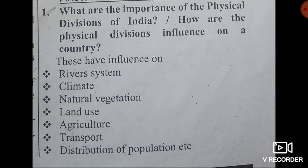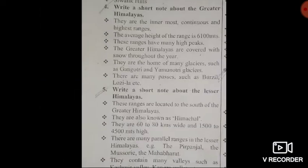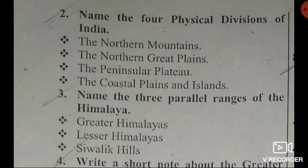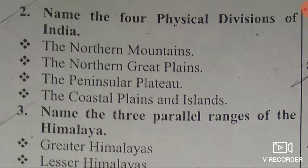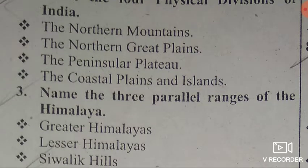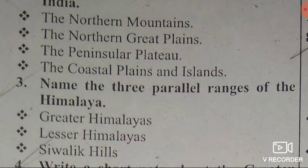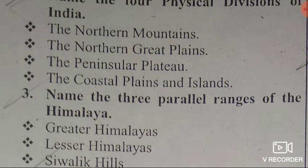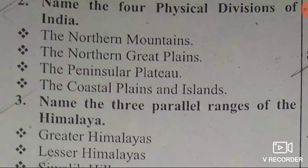Keep in mind — very, very important. The importance of physical divisions: river system, climate, natural vegetation, land use, agriculture, transport, and distribution of population. Second question: Name the four physical divisions of India. One is the Northern mountains, second is the Northern great plains, third is the Peninsular Plateau, and fourth is the coastal plains and islands.